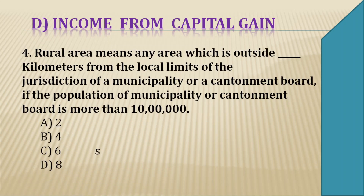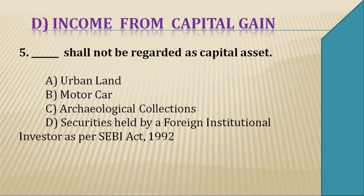Question 4: The rural area means any area which is outside ____ kilometers from the local limits of the municipality or cantonment board, if the population of the municipal or cantonment board is more than 10 lakhs. Options are A — 2 km, B — 4 km, C — 6 km, D — 8 km. The right answer is D — 8 kilometers.